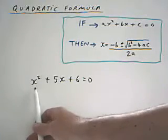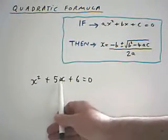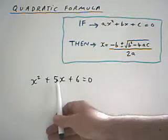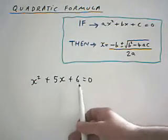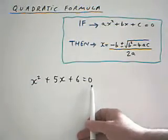Minus 3 squared is positive 9. Minus 3 times 5 is minus 15. Minus 15 plus 9 is minus 6, add the 6, we get 0. So that works as well.